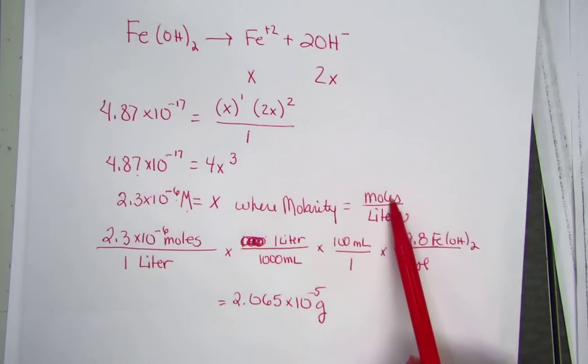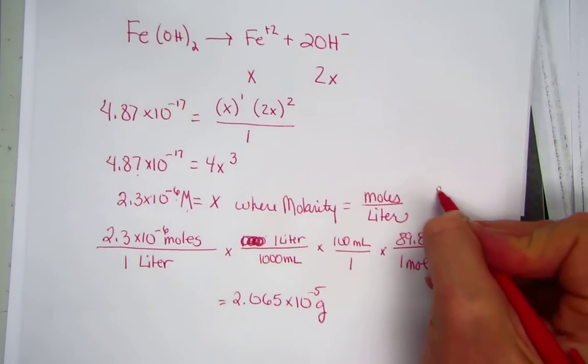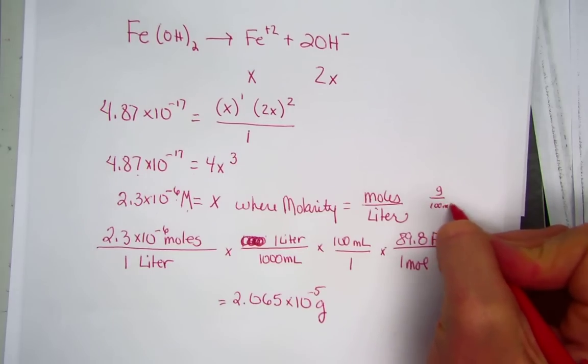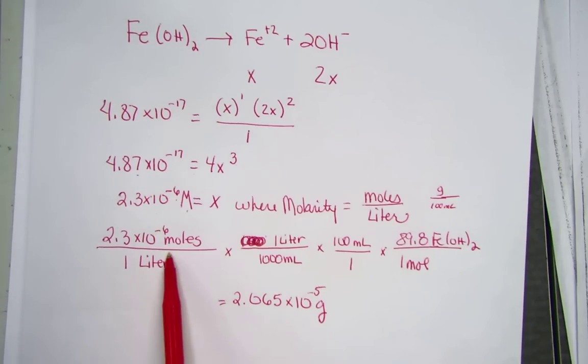Big M is moles per liter. Our desired unit is grams per 100 mils. So just carrying that answer down, representing big M in terms of moles per liter.